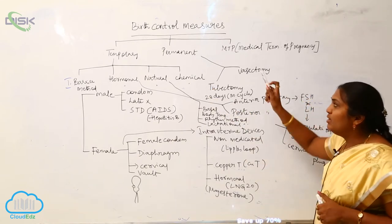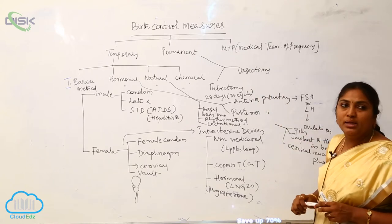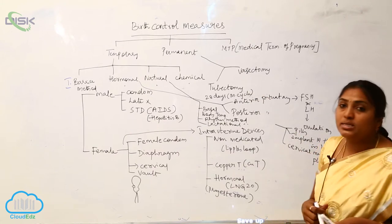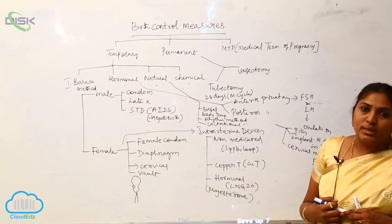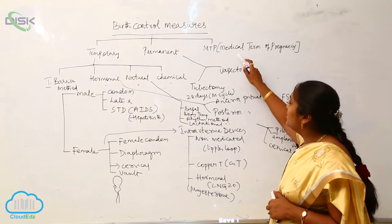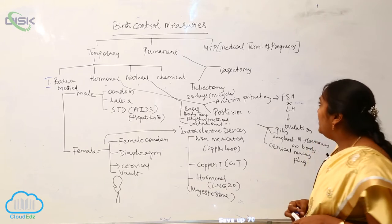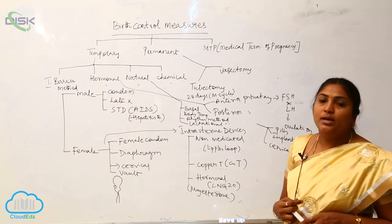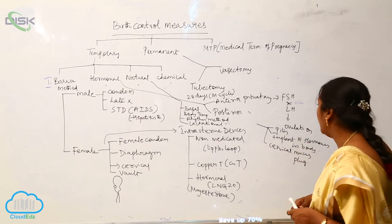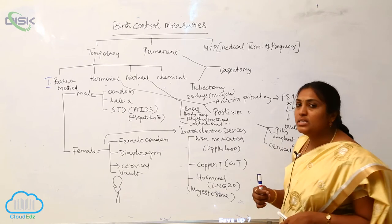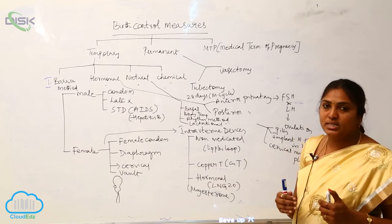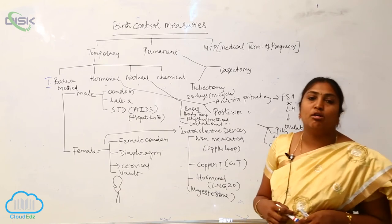The second major category is the permanent method. These include vasectomy, done in males, and tubectomy, done in females, to permanently control birth. The third category is MTPs — medical termination of pregnancy. In this method, pills are given and hormonal implants are placed in the female's uterine region, and cervical mucus devices are also kept. This falls under the intrauterine devices of the barrier method.